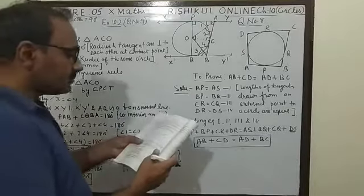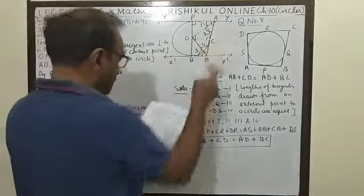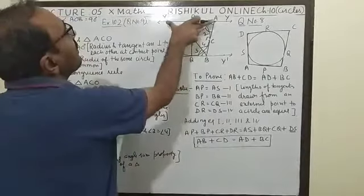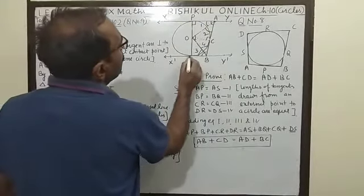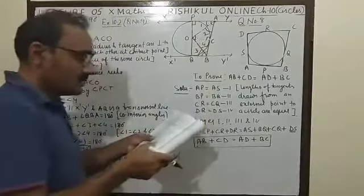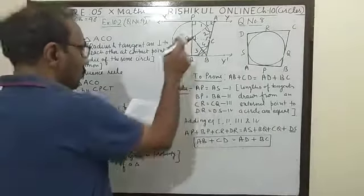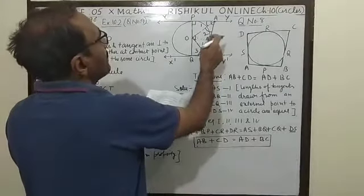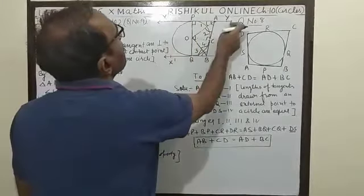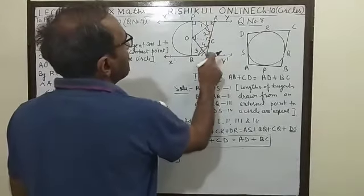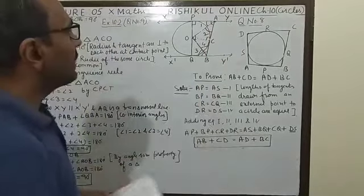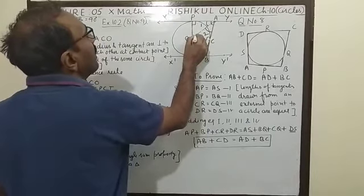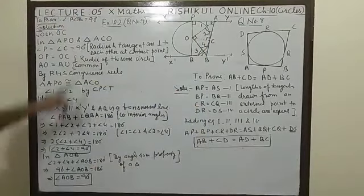Question number 9 is: xy and x dash y dash are two parallel tangent to the circle with center O. And another tangent AB with point of contact C, intersecting xy at point A and x dash y dash at point B. Prove that angle AOB equal to 90 degree. How can you prove that this angle is equal to 90 degree?